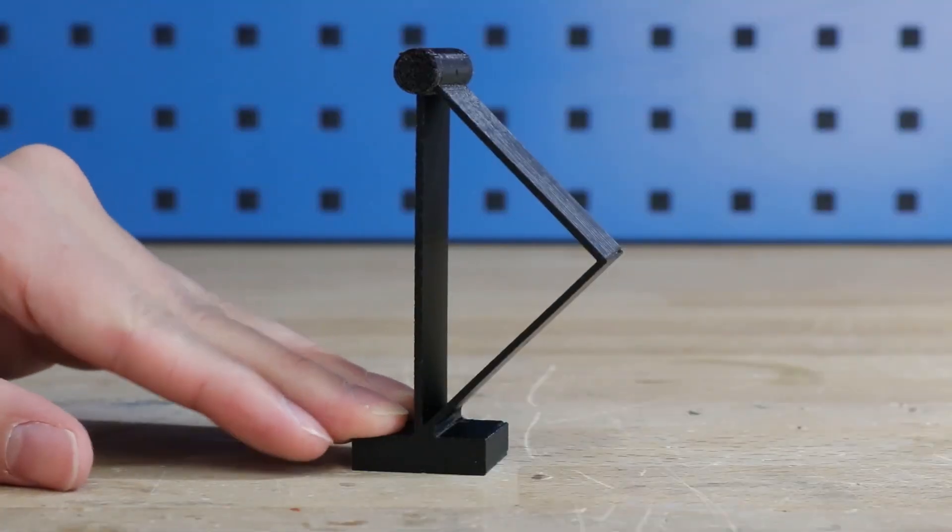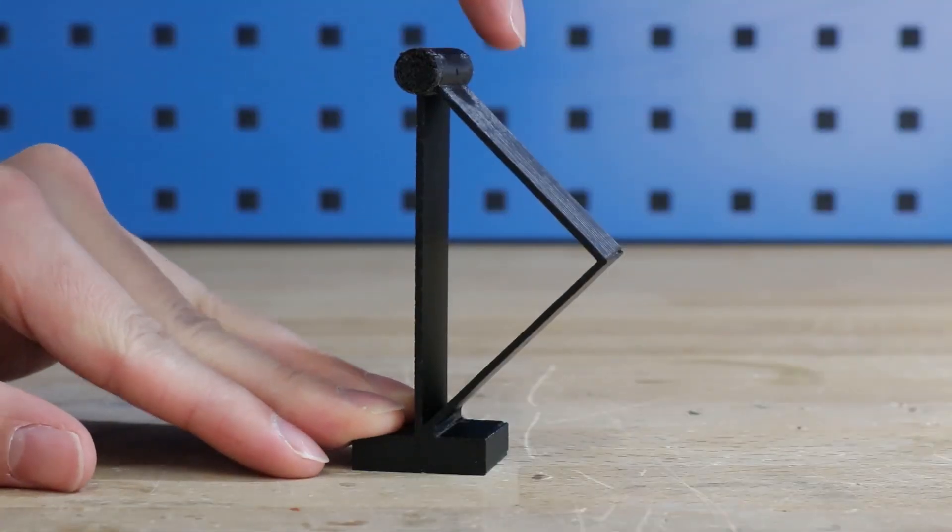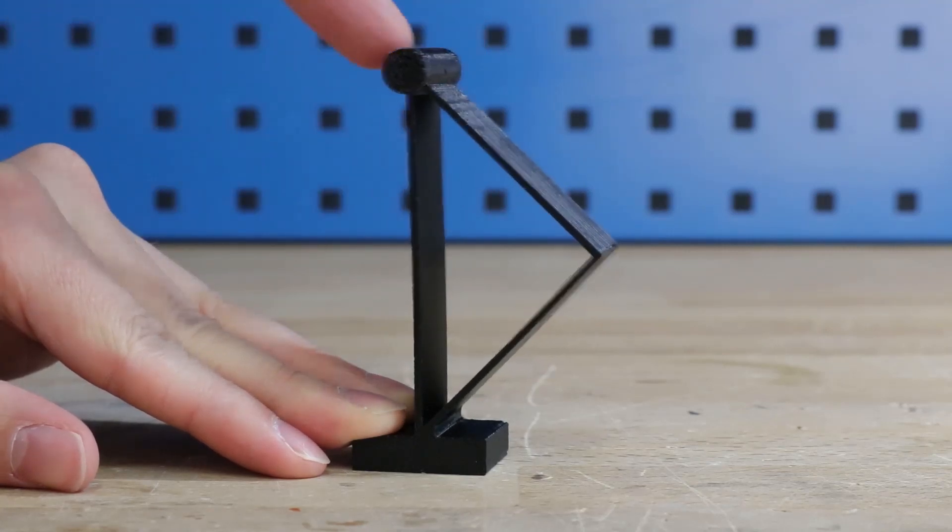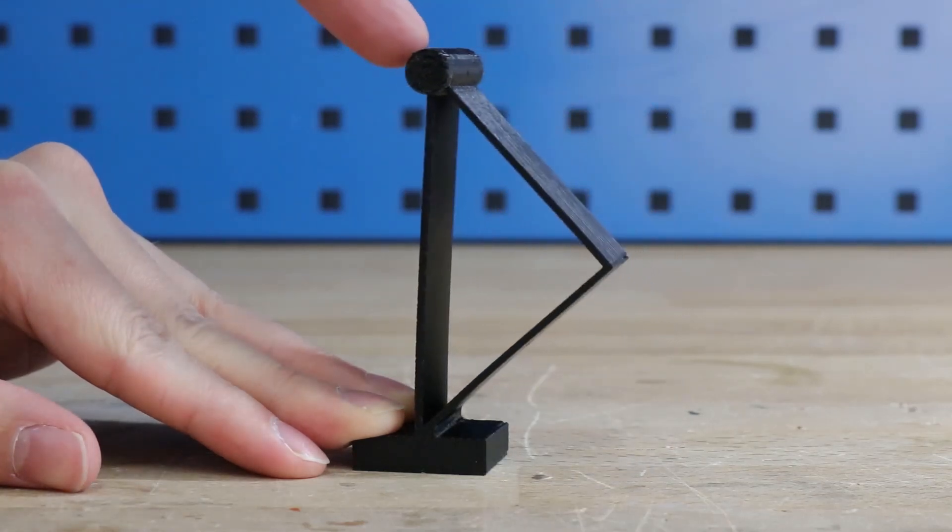As a simple building block for compliant mechanisms, we study a prismatic flexure element designed to allow bending of its axial wall while the other two walls offer increased rigidity to lateral bending and twisting.